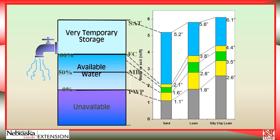A quick review of this diagram to help us remember what we're talking about. The very temporary storage water is above field capacity, represented on this loam soil as about two inches of water shown in blue. There's also available water, which is the water between field capacity and permanent wilting point. This is the water that we're managing with our irrigation scheduling, represented by the yellow and green bars through the middle of the range — again about two inches of water.